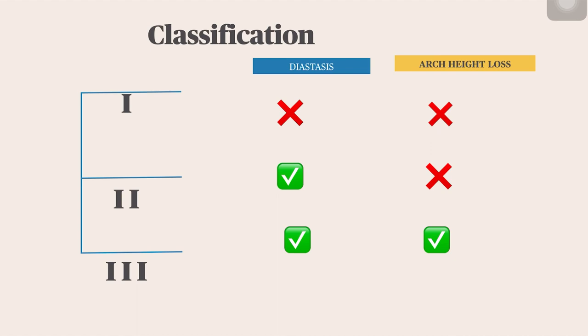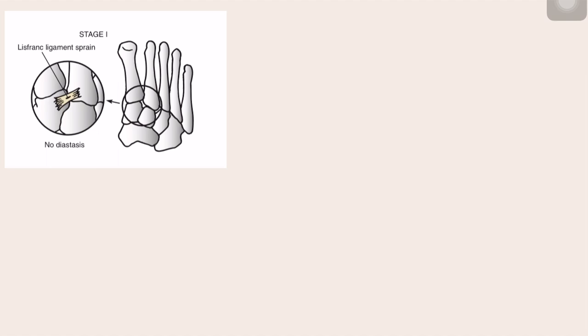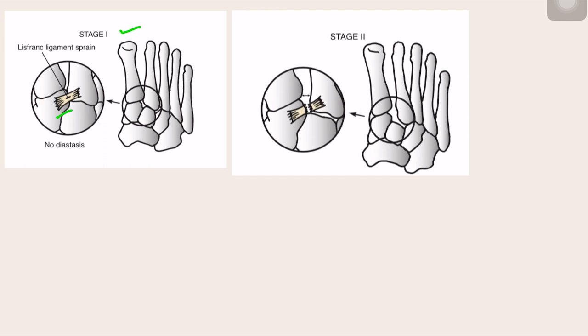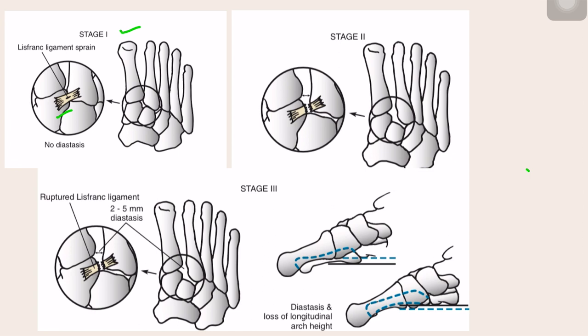Stage 1 shows sprain with no diastasis — just stretching of the Lisfranc ligament. Stage 2 shows intrasubstance rupture resulting in diastasis. Stage 3 shows a ruptured ligament with diastasis and arch height loss. Now let's come to the treatment part.